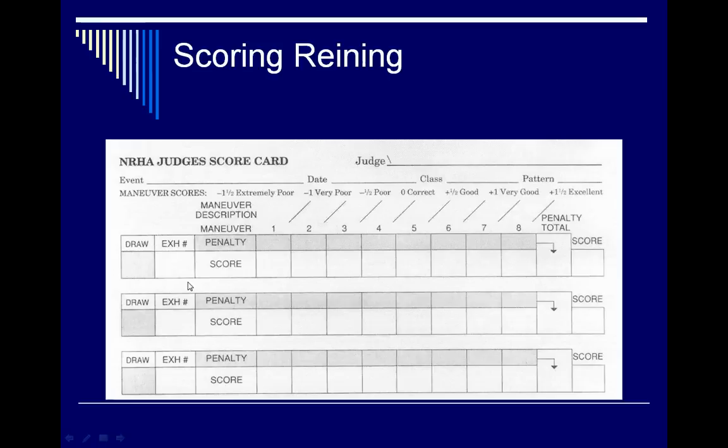Here's an example of the scorecard from the National Reining Horse Association. You put the exhibitor number in the designated box. Penalty points are only assessed if a horse incurs specific infractions. They range from minus one-half to minus five and are only assessed if a horse does something incorrectly.